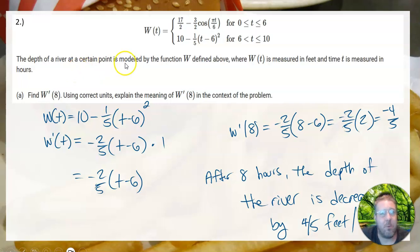It says the depth of the river at certain points is modeled by the function W defined above, where W(t) is measured in feet and t is measured in hours. Find W'(8) using correct units and explain the meaning of W'(8) in the context of the question.